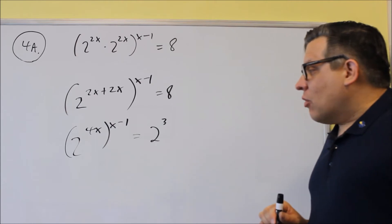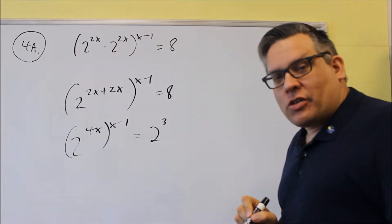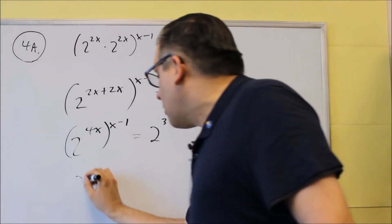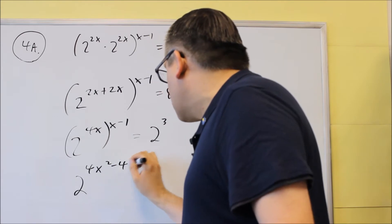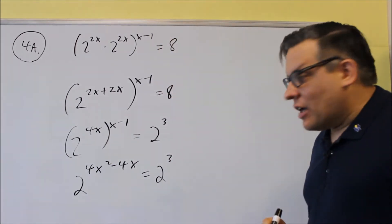So now that the bases are equal, we want to get rid of the parentheses part that's there. When you do that, you're raising a power to another power, you're going to multiply exponents. So you're going to get 4x squared minus 4x, and now we have a 2 to the third on that side.